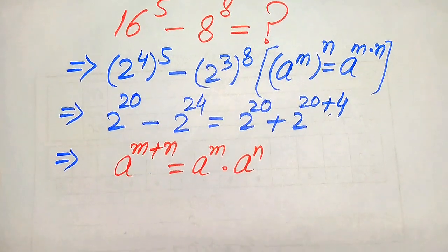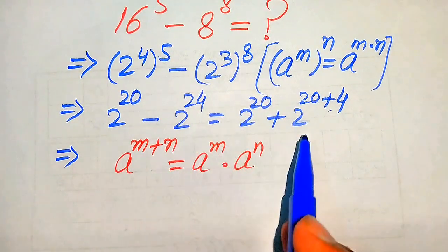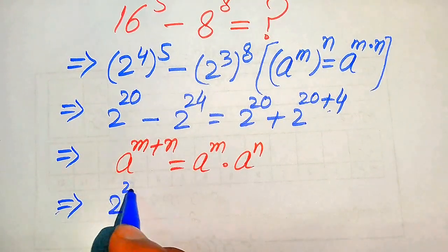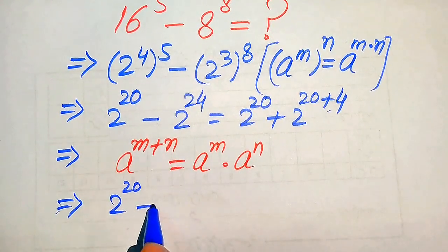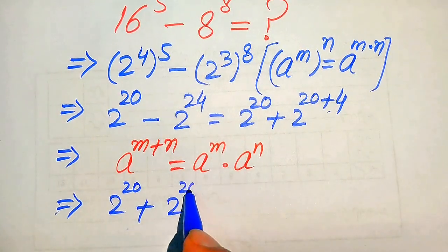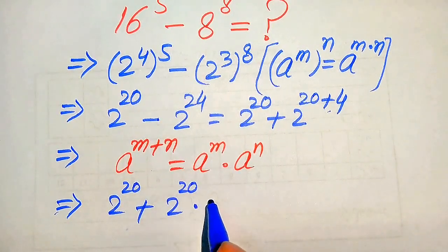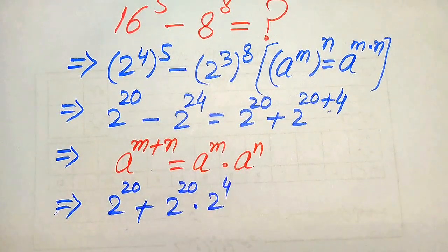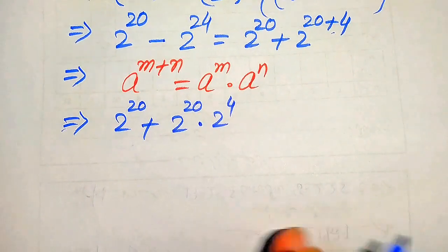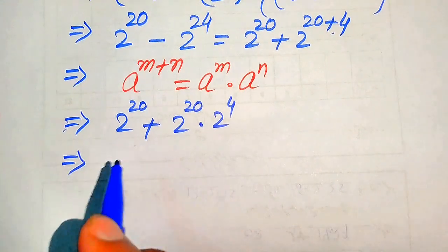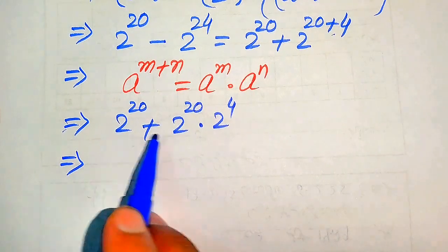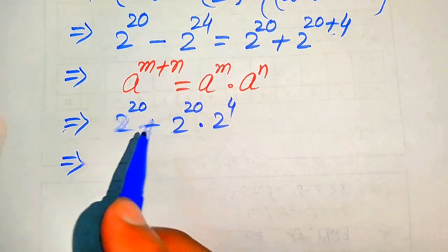According to this exponent law, we break these exponents and it is written as 2 to the power of 20 minus, and when we break the second term it becomes 2 to the power of 20 multiplied by 2 to the power of 4. Then we take 2 to the power of 20 as a common factor since it appears in both terms.